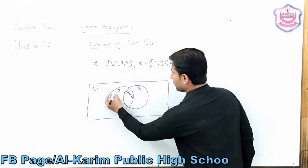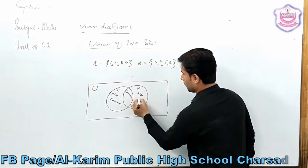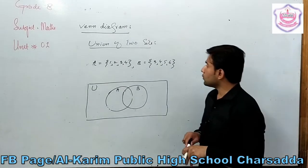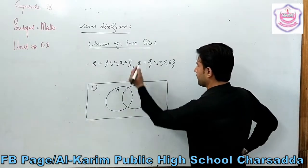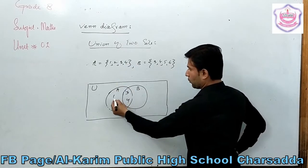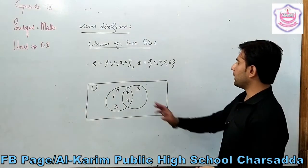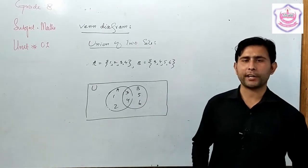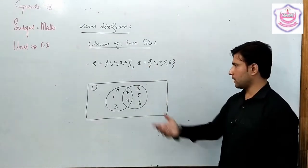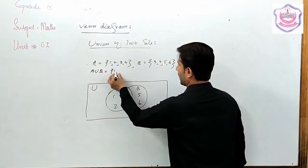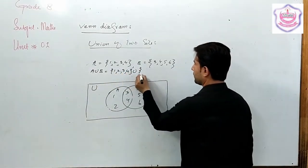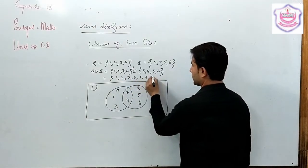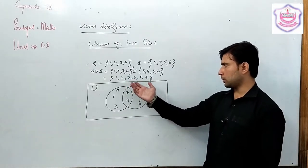The common elements are 3 and 4. The non-common elements of set A are 1 and 2, and the non-common elements of set B are 5 and 6. So A union B gives us the result: 1, 2, 3, 4, 5, 6 — combining all elements into a single set.